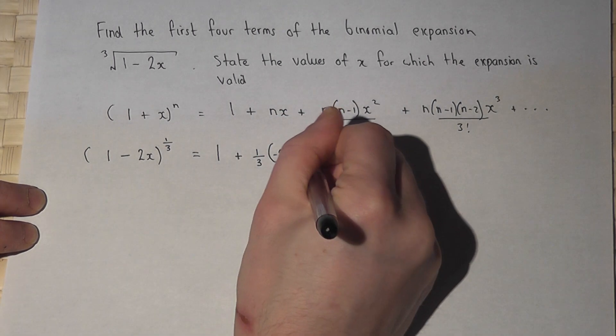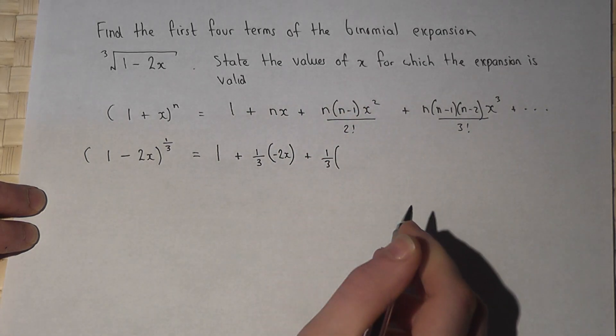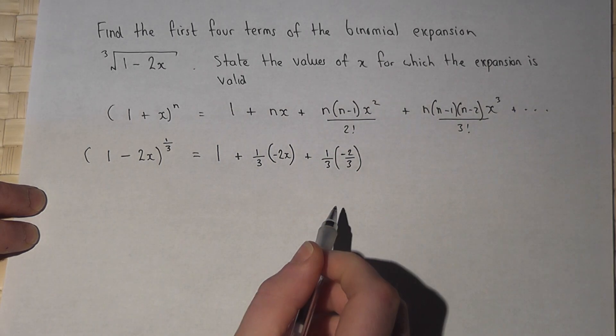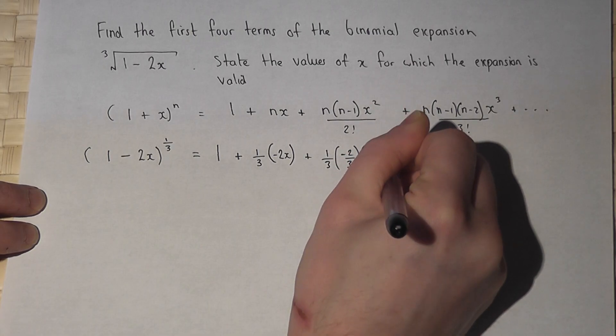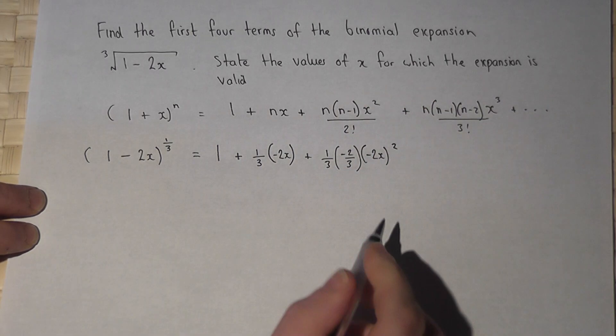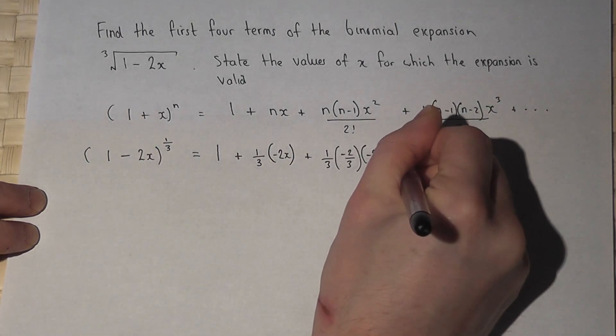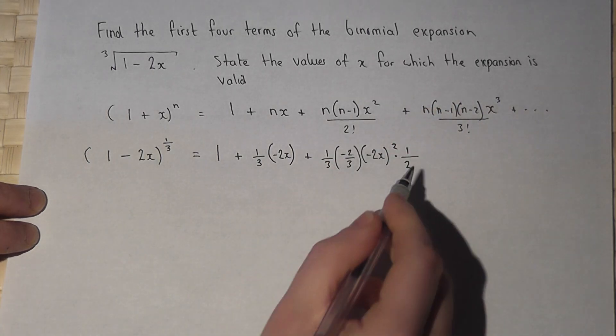Now n was a third. A third take 1 is minus 2 thirds. Rather than x squared I've got a minus 2x all squared, and divide by 2 factorial. That's the same as times by 1 over 2 factorial which is 1 over 2.